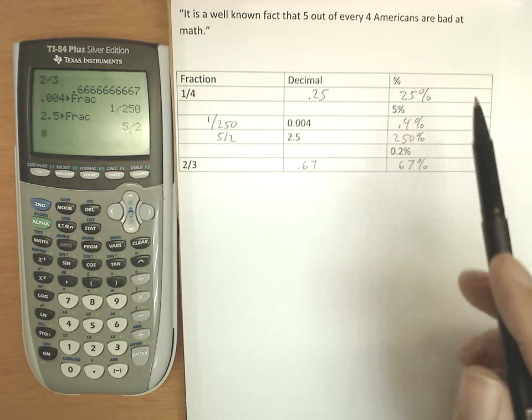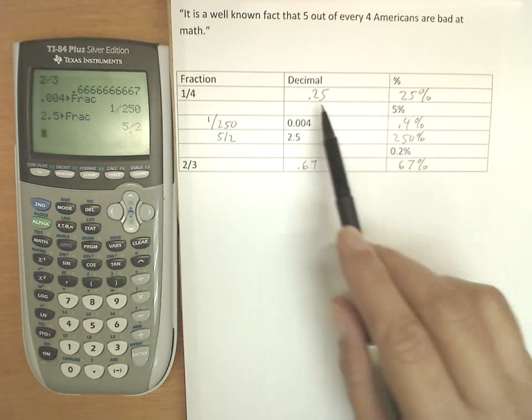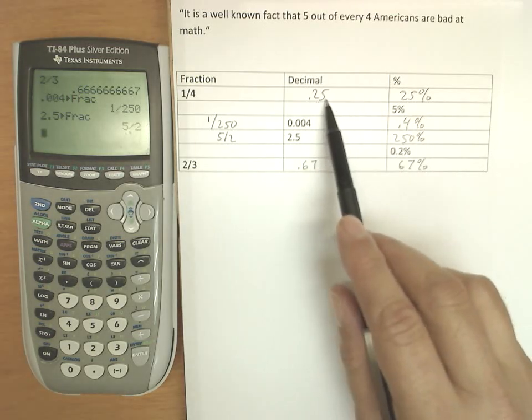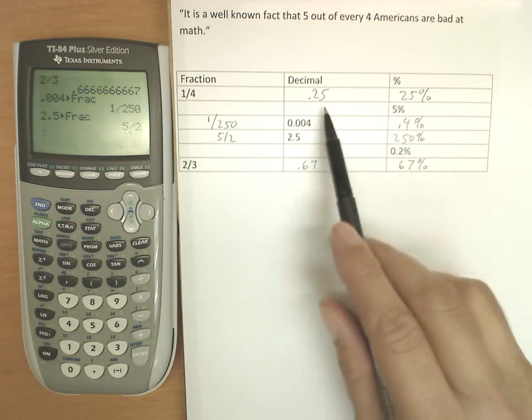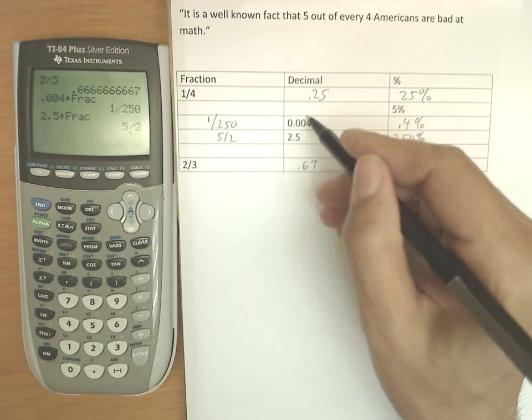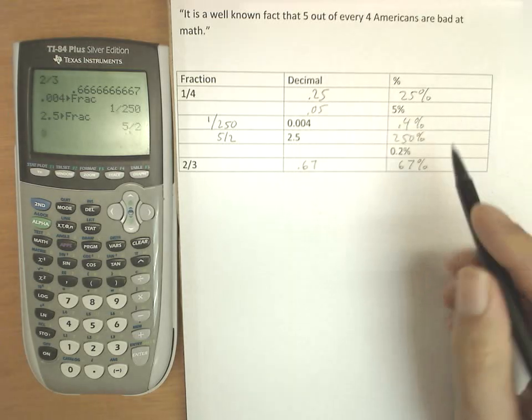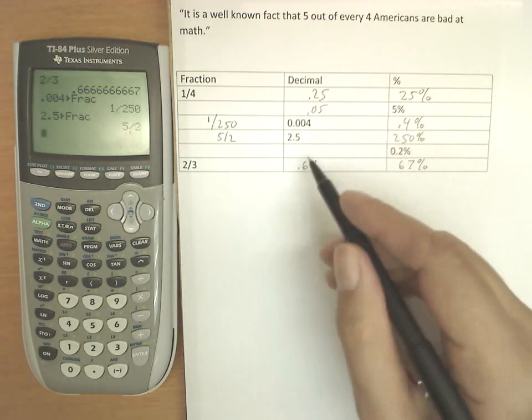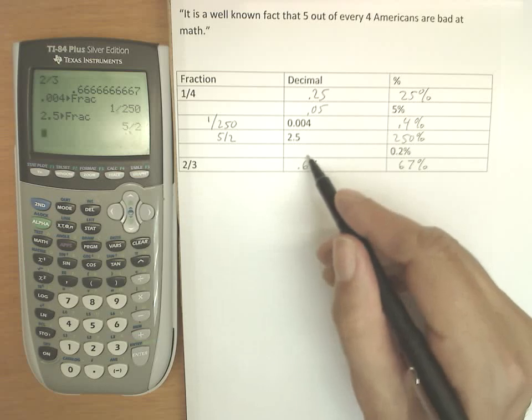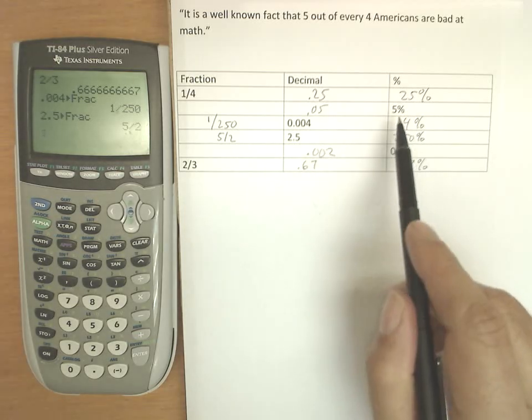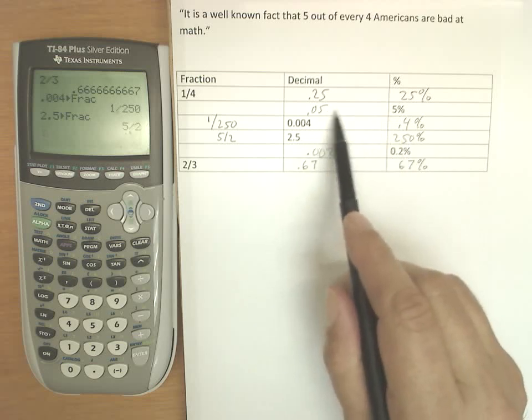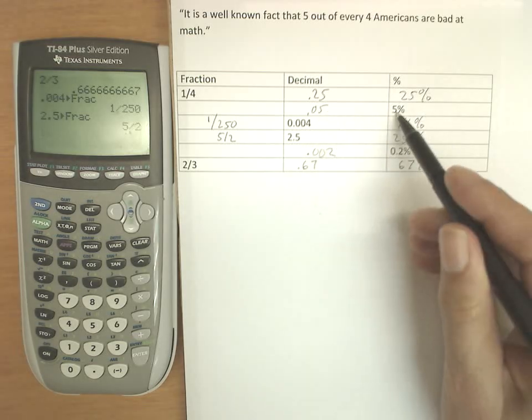Now going the other way, we'll move the decimal the opposite direction. So if 0.25 became 25%, we would move the decimal back two to the left. So in this case, 5% we'll move it two to the left, getting 0.05. And 0.2%, moving it two to the left, would be 0.002 as a decimal. So I misspoke there, 5% would be 0.05. We move the decimal from where it naturally lives right here, two spots to the left.